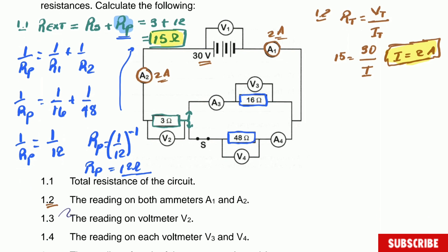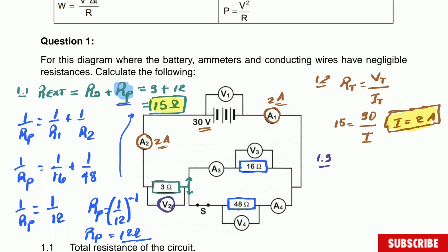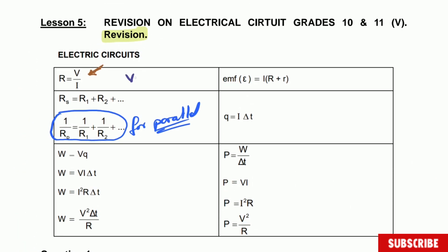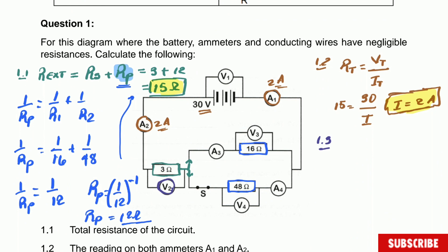Question 1.3: calculate the reading of voltmeter V2. V2 is the potential difference only for the 3 ohm resistor. You can use Ohm's law, which is the same formula expressed as: V = I × R, or equivalently R = V/I. We'll apply that formula for the 3 ohm resistor.